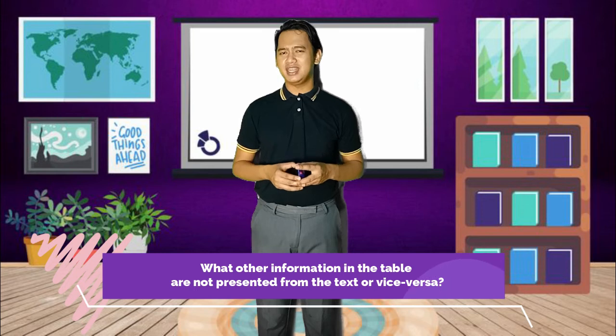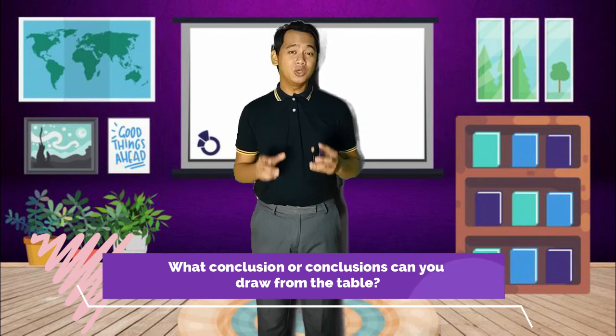Question number five: What other information in the table is not presented from the text, or vice versa? You're very good! The winning moment of Gilas Pilipinas, the volleyball team and beach handball, as well as the other competing countries and the medals they received, were not presented in the table. Very well said! You have such keen eyes! And for the last question, what conclusion or conclusions can you draw from the table? Excellent! I see you have different conclusions, but you all got a point. Well done, intelligent grade 8 students! I think that's a wrap for the first expository text feature, which is the table.